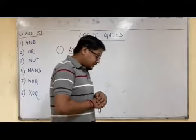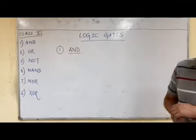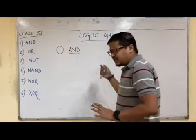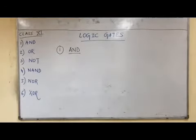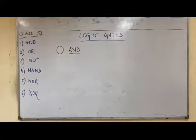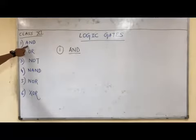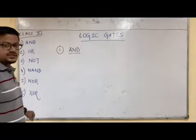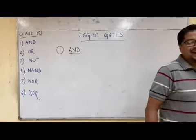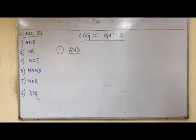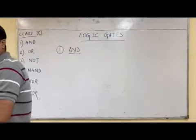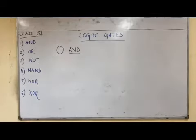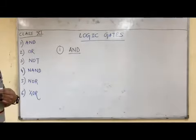Welcome back students. In this video we will be seeing about logic gates. Before we start, let us define a logic gate. A logic gate is a kind of circuit that takes input, processes it, and gives us the output. The processing can be in the form of AND, OR, and NOT rules. A logic gate is a circuit which may take one or more inputs and give us the output after processing, depending on what kind of logic gate we are using.